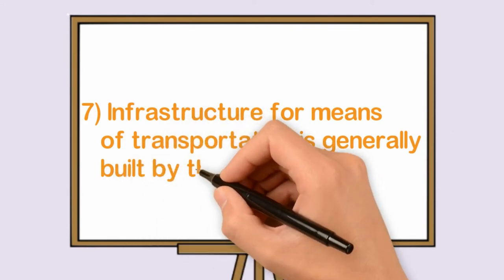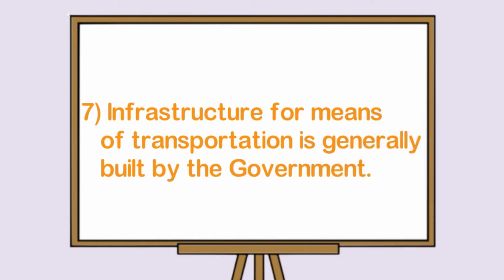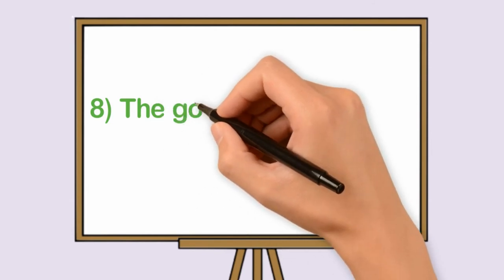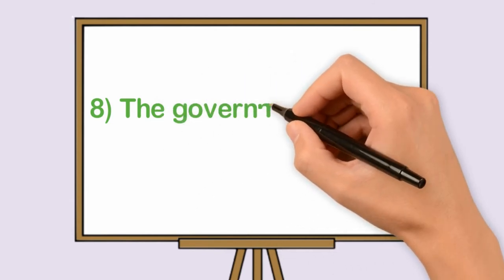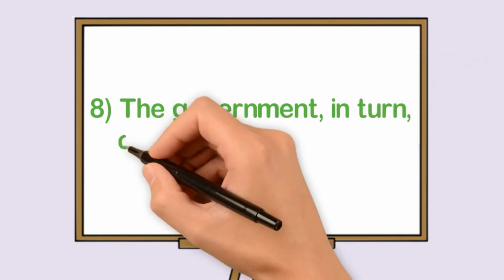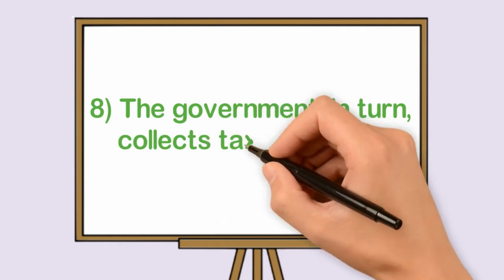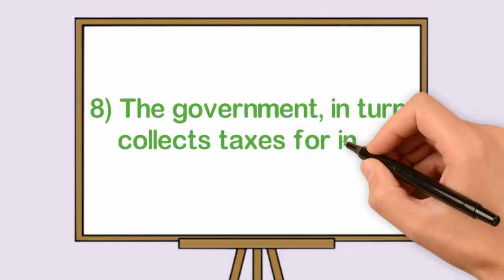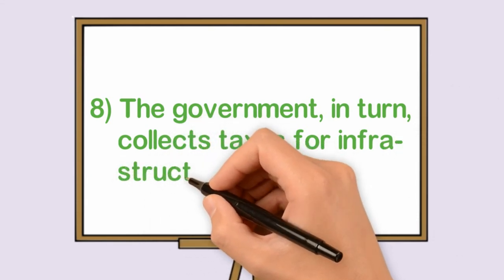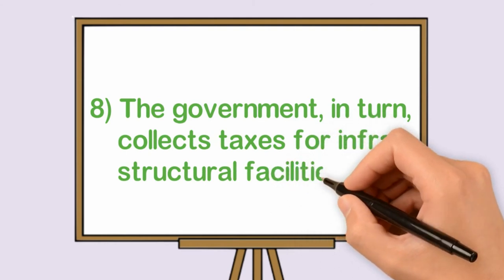Infrastructure for means of transportation is generally built by the government. The government in turn collects taxes for infrastructural facilities.